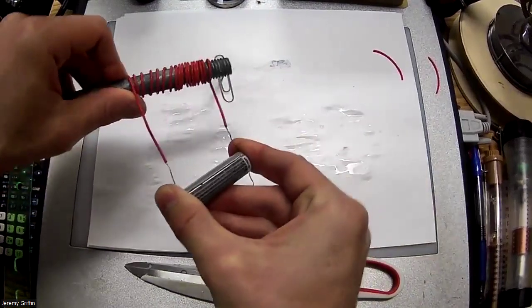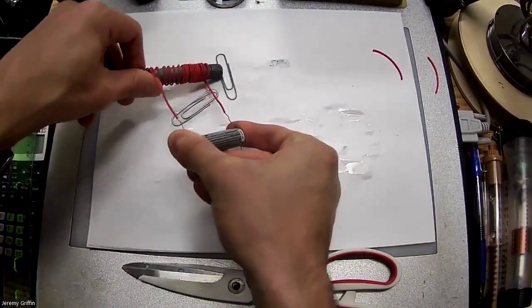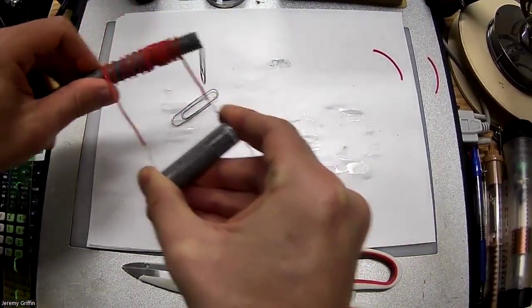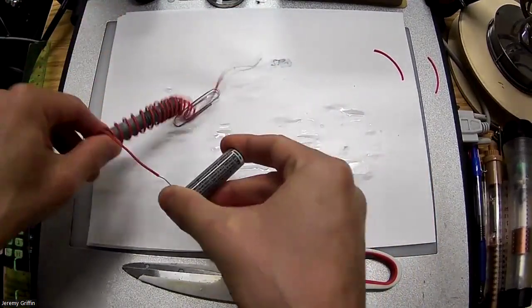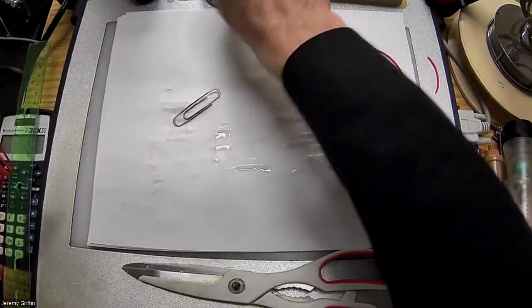Let's see if I can pick up these paper clips now. Ah, look at that, look at that. Now I can pick up the paper clips. Okay, until I open the circuit, take the battery off. And now it's no longer magnetic. There you go. So that's electromagnet.